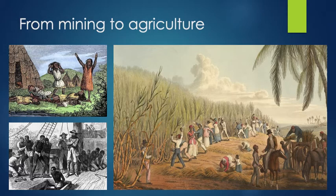If you look at the population of the Caribbean today — countries like the Dominican Republic, Cuba, Jamaica — the people there are descendants of Africans. They don't look like the people of mainland Peru, Ecuador, or Mexico. They're not so much indigenous; they're a lot more African and mixed African-European because of this process.